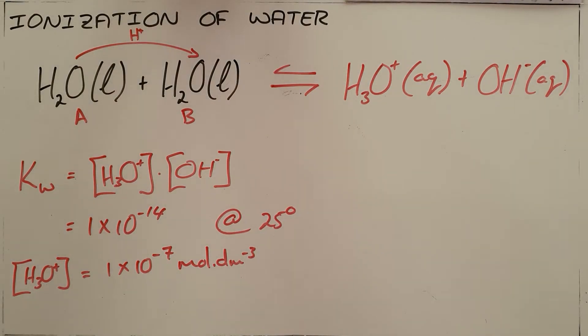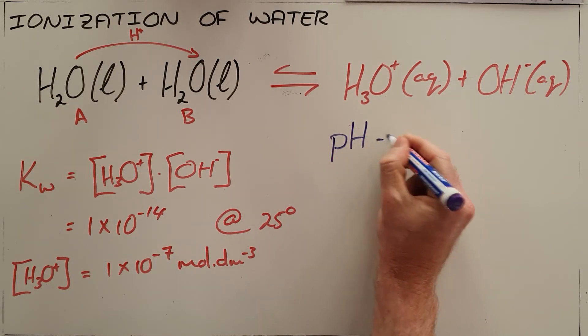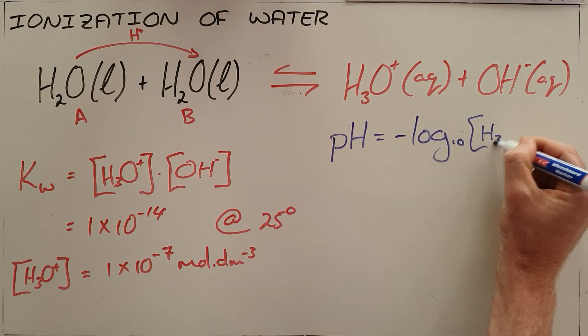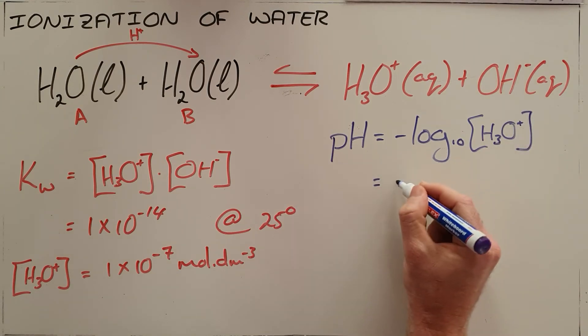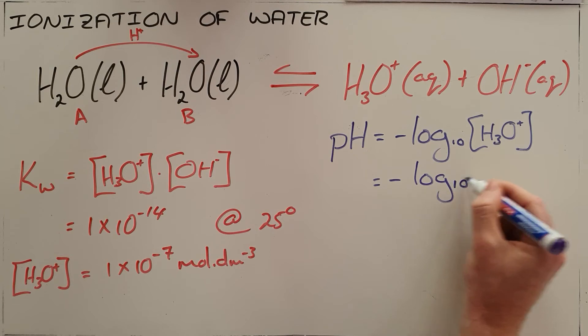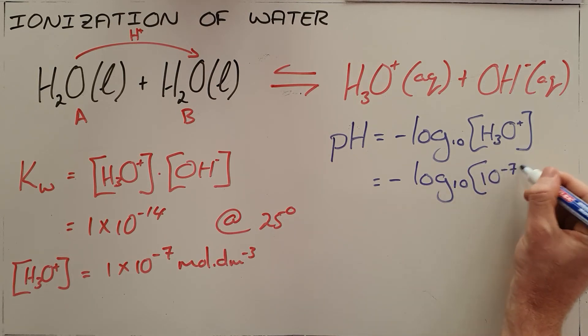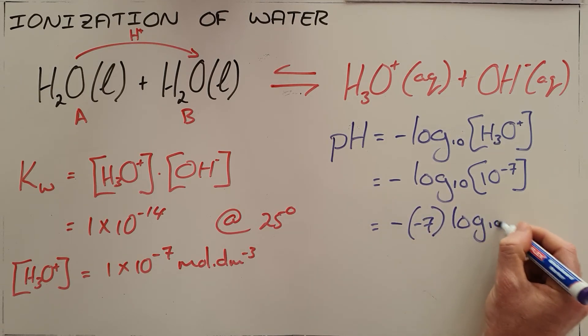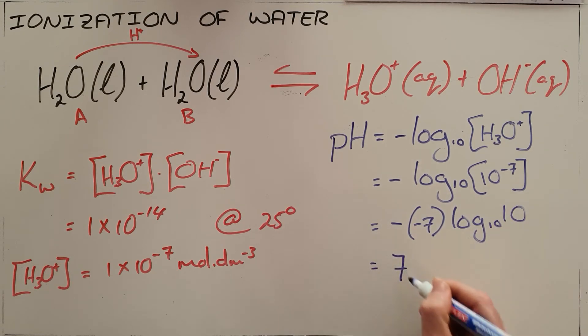This auto-ionization of water allows us to define a neutral or midpoint on our pH scale. We know that the pH of a substance can be calculated using negative log base 10 of the hydronium concentration. And so negative log base 10 of 10 to the power of minus 7 can be simplified as negative 7 log base 10 of 10, which tells us that the pH of water is 7, our neutral point on the pH scale.